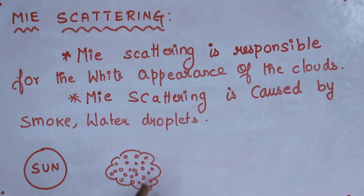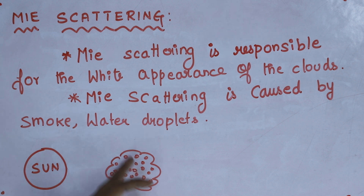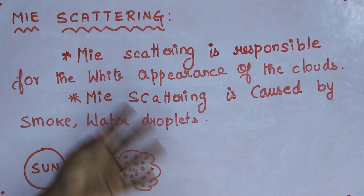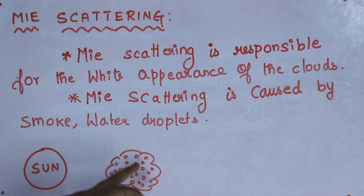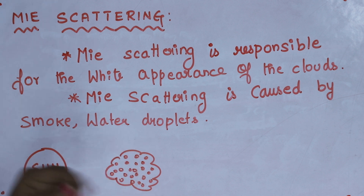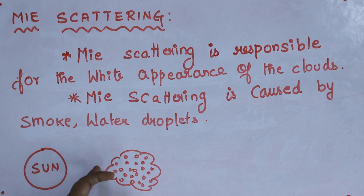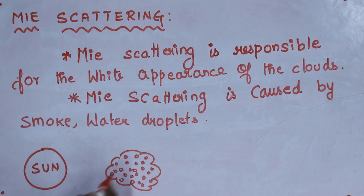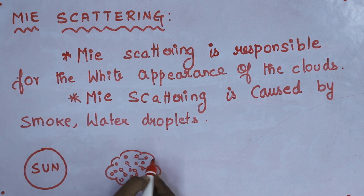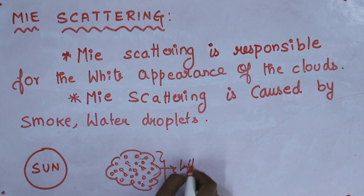Water droplets are present inside the clouds — not only water droplets, but some other particles are also there inside the clouds. You consider this as sun and clouds. When white light falls on the water droplets present inside the clouds, all the colors are equally scattered, which together form the white color.